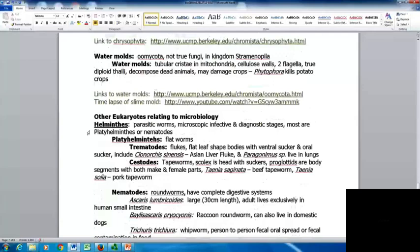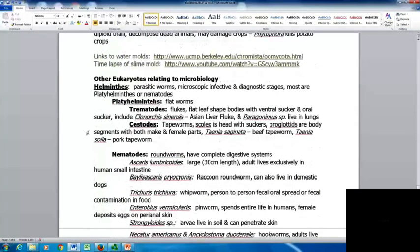There are other eukaryotes related to microbiology. The helminths are parasitic worms. They can be quite large but have microscopic infective and diagnostic stages. Most are the Platyhelminthes or nematodes. Platyhelminthes are the flatworms. The first group are the trematodes or flukes with flat leaf-shaped bodies with a ventral sucker and oral sucker. This includes Clonorchis sinensis, the Asian liver fluke, and Paragonimus species that live in the lungs.